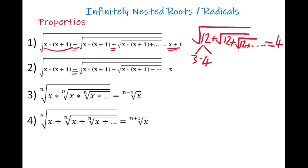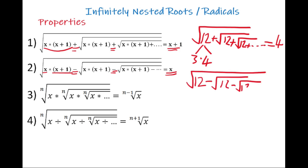If there is a subtraction between the roots, again that number has to be written as a multiplication of two consecutive numbers — if one is x, the second should be x plus 1. Because the operation is negative between the roots, the result is equal to the smallest multiplier. So for square root of 12 minus square root of 12 minus... going to infinity, the result is 3, the smallest multiplier.